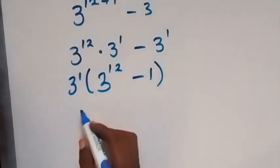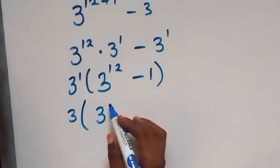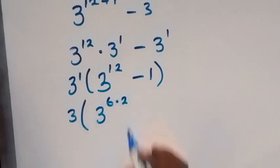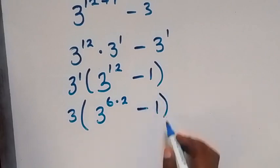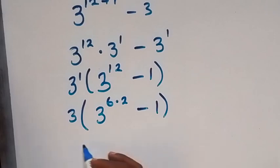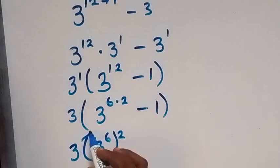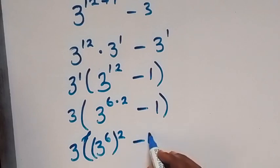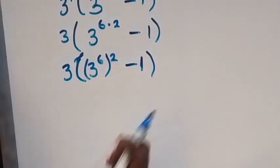this is the same thing as 3 into bracket, 3 raised to power 12. We separate 12 as 6 times 2 — 6 times 2 is 12 — then minus 1. From here we can write it again as 3 into bracket, 3 raised to power 6, putting the two outside because the power multiplies, from the law of indices.